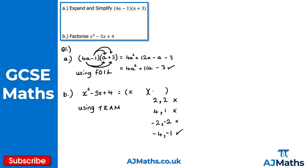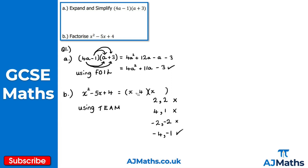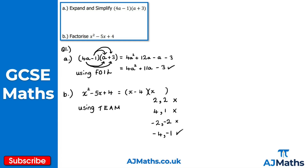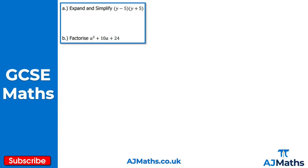Now we factorize into double brackets. Because we're working with variable x, we get an x at the front of both brackets. We put the numbers in as found: x minus 4 and x minus 1. That's the solution to part b and question one.